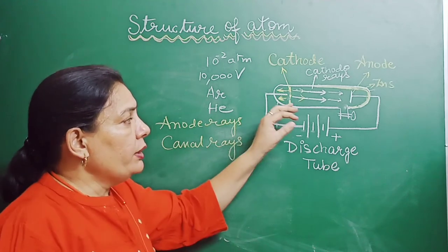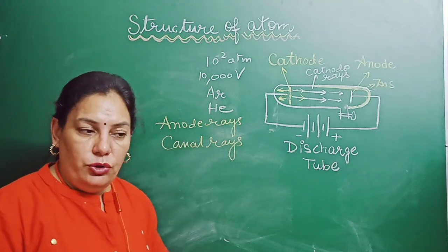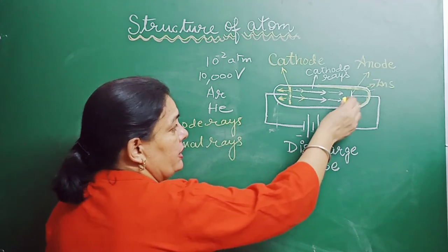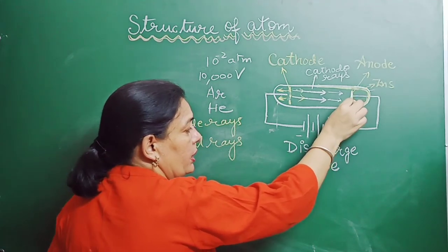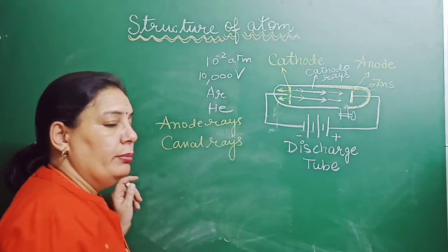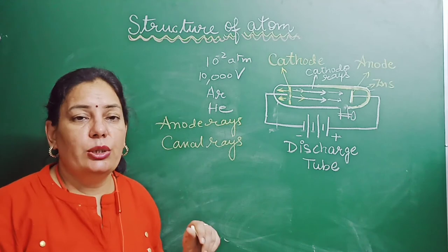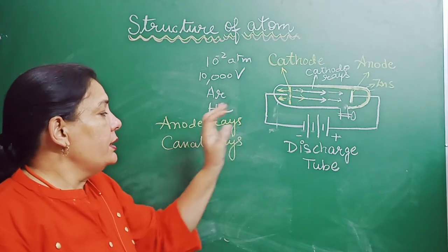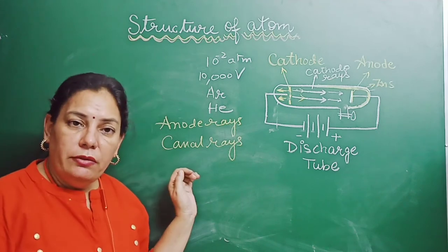What would be the nature of these rays - positive, negative, or neutral? These rays arise from the positive terminal and move towards the negative terminal. It means they are made up of positively charged particles. Anode rays or canal rays are made from positively charged particles.